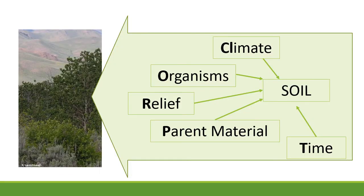The bottom line is: when you combine climate, organisms, relief, parent material, and time to create soil, all of those things affect the type of vegetation on the site. A good soil scientist is also a good botanist — they know the plants and plant communities because those reflect what soil is underneath. Many soil maps were initially based on plants, because what plant is there tells you what kind of soil is below the surface.